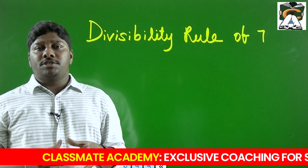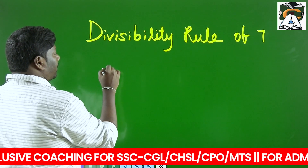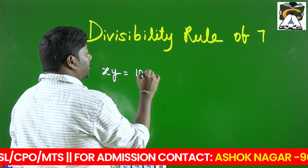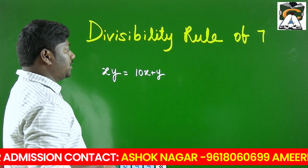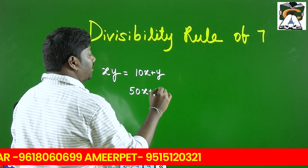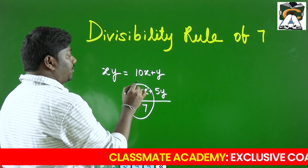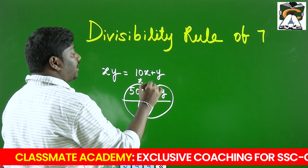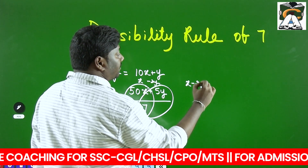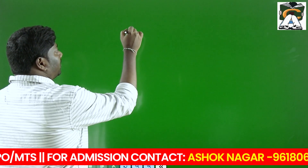For a two-digit number, you can check it directly. Suppose a number XY is divisible by 7, then its expanded form is 10X + Y, which is also divisible by 7. Multiply it by 5: 50X + 5Y is also divisible by 7. The remainder you get is X from the first part, and 5Y — or equivalently minus 2Y — from the second part.